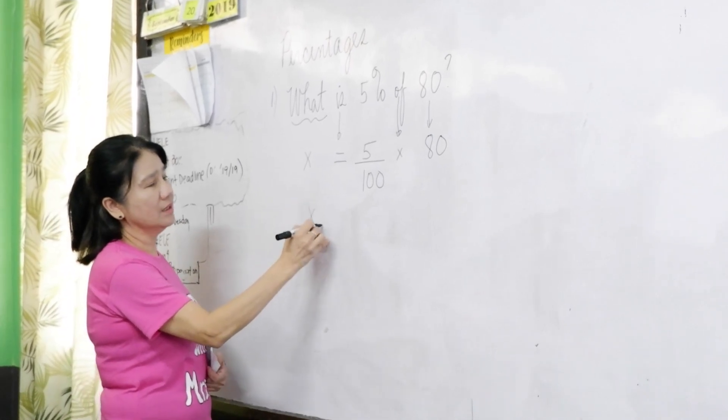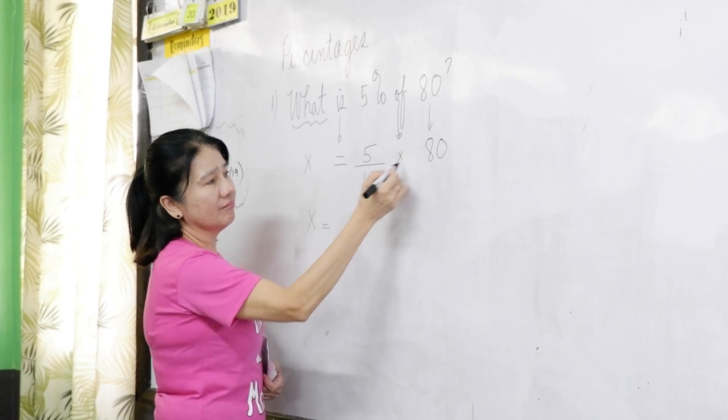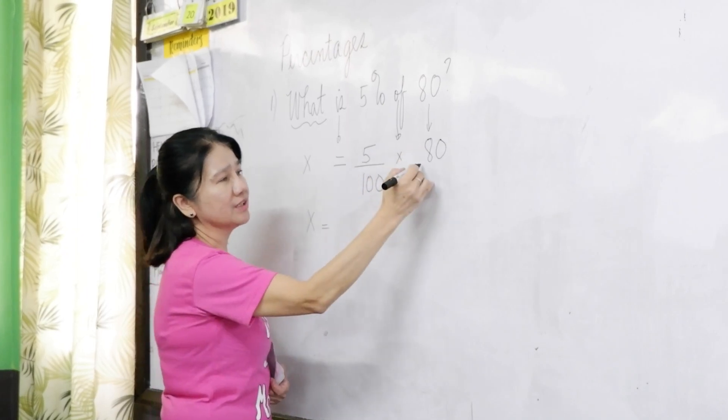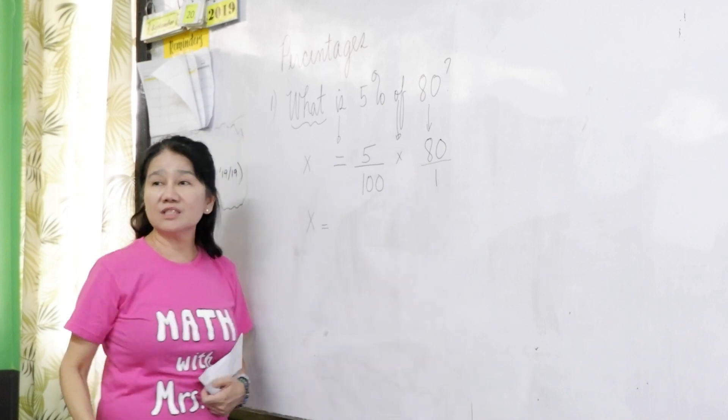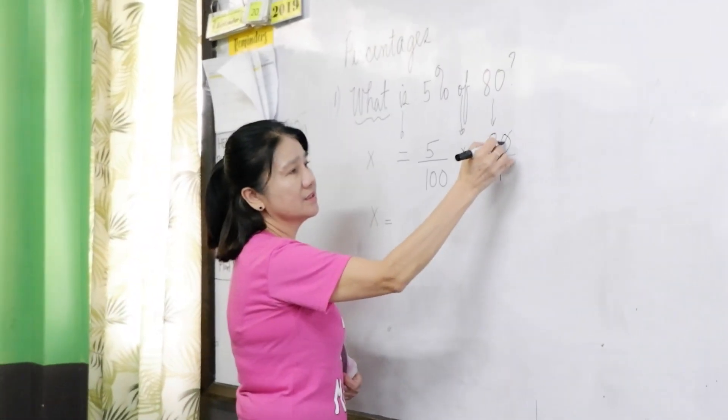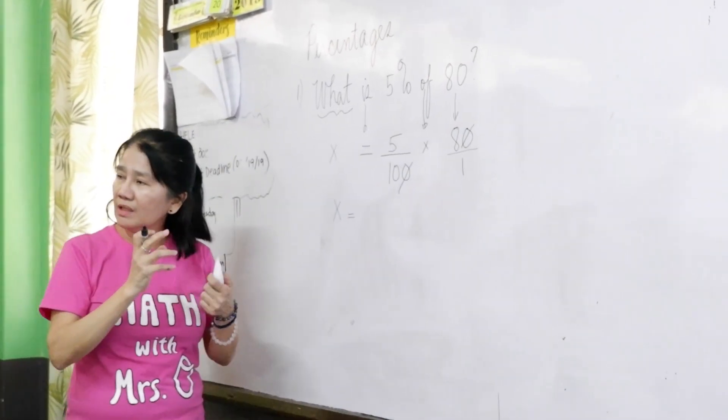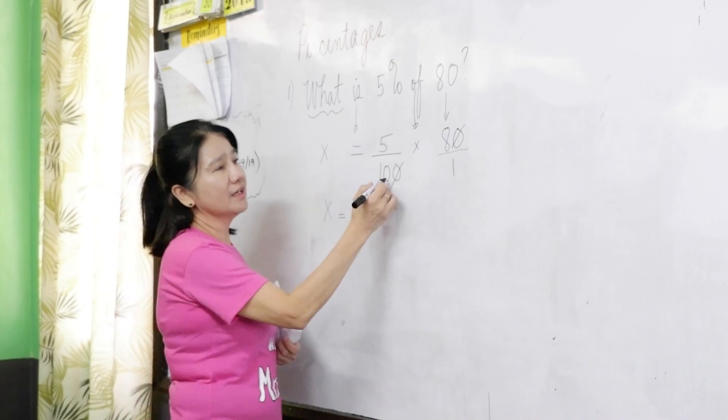So, you see that we can cancel 80 and 100, right? This is 80 over 1. 80 is just 80 over 1, I mean. And then we have here 0, can cancel with 0, so that we are decreasing the number.